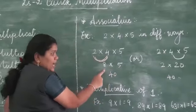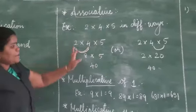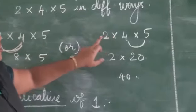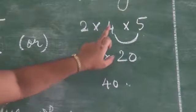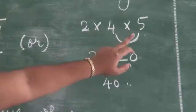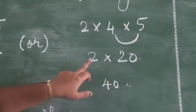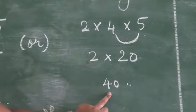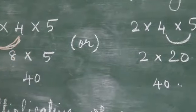The same numbers 2 × 4 × 5 can be multiplied another way: keep 2 as it is and multiply the last two digits — four into five equals 20. Then multiply 2 by 20, which also gives 40. The order changes but the product remains the same — that is the associative property.